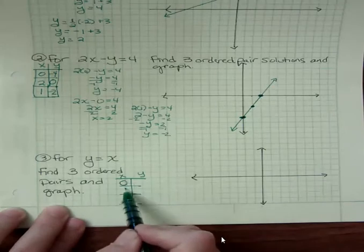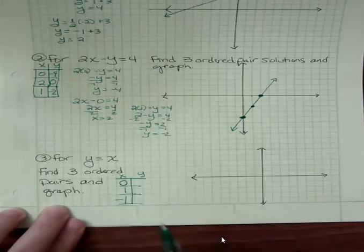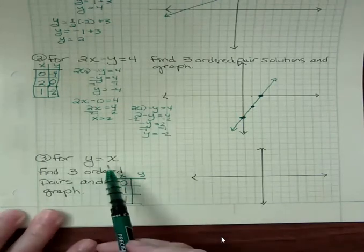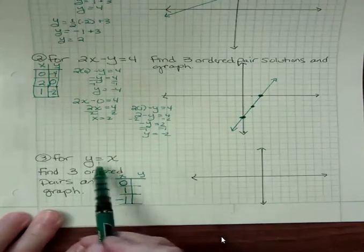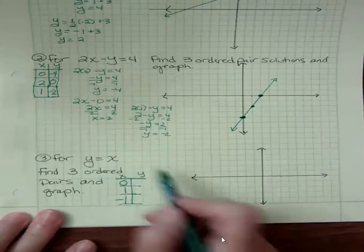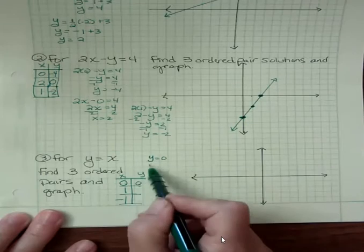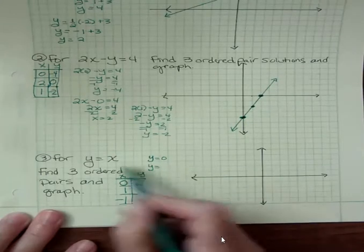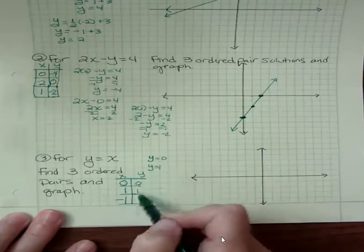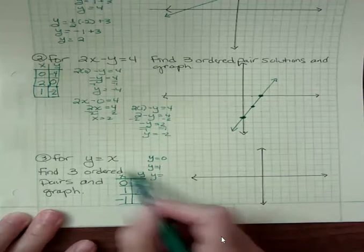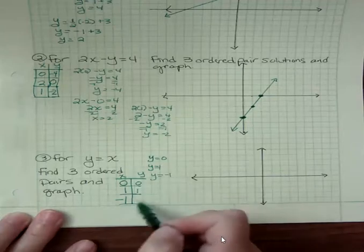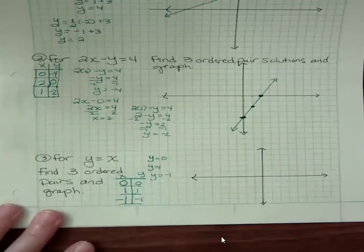What this equation says is that X equals Y. So if I plug in, what if X is zero? I get Y is zero. I plug in, what if X was one? Then Y is one. I plug in, what if X was negative one? Then Y is negative one. All that says is that they equal each other. That's it.